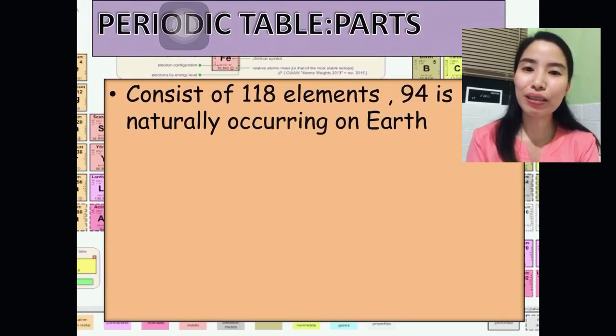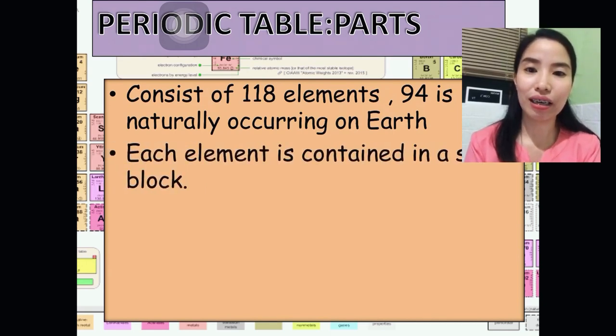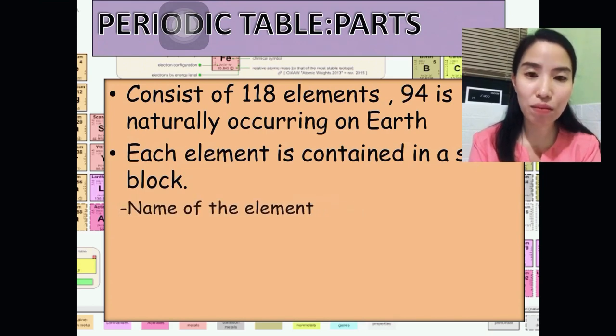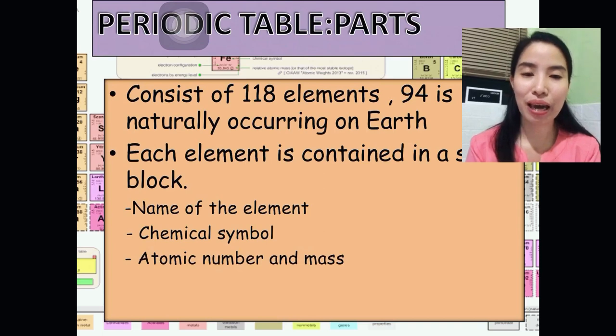Periodic Table is consisting of 118 elements. 94 are naturally occurring on earth and some of it are still under study. Each element is contained in a block that has the name of the element, chemical symbol, atomic number, and mass.